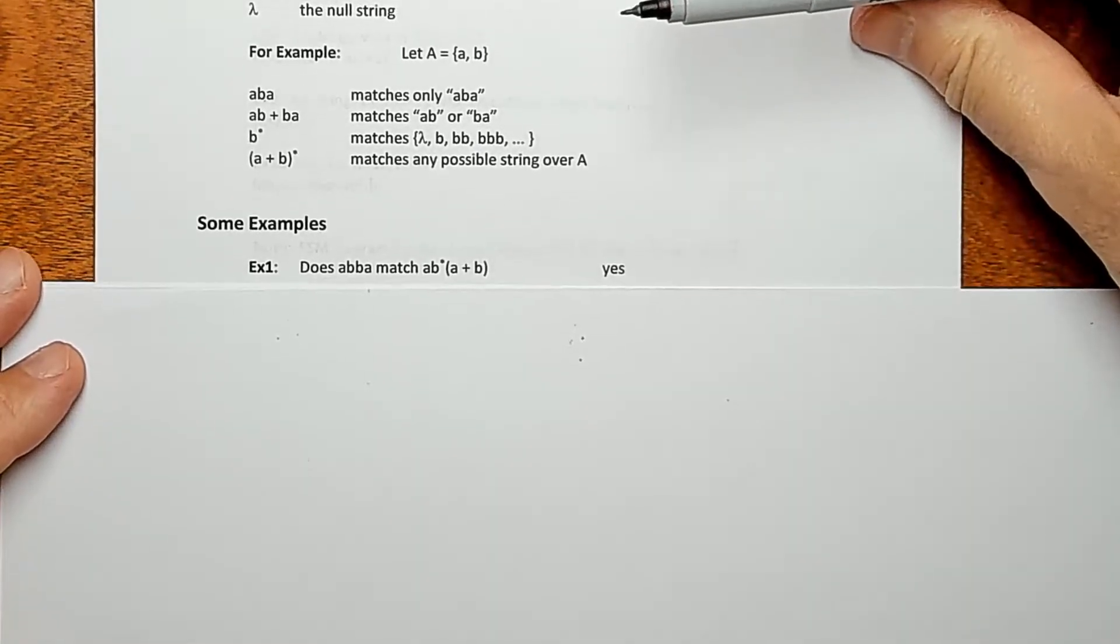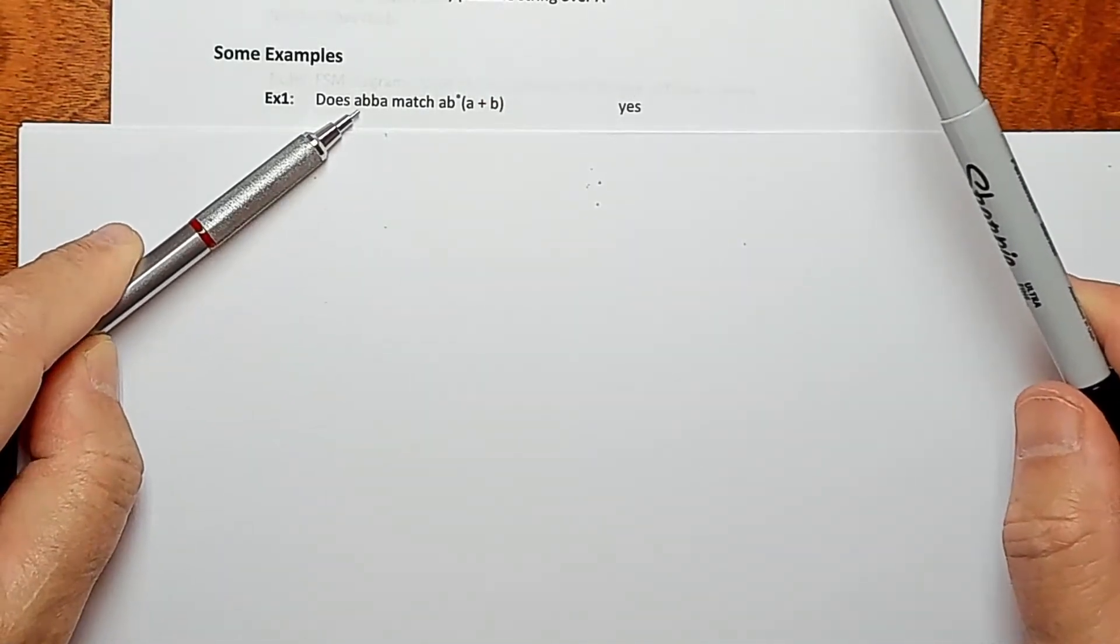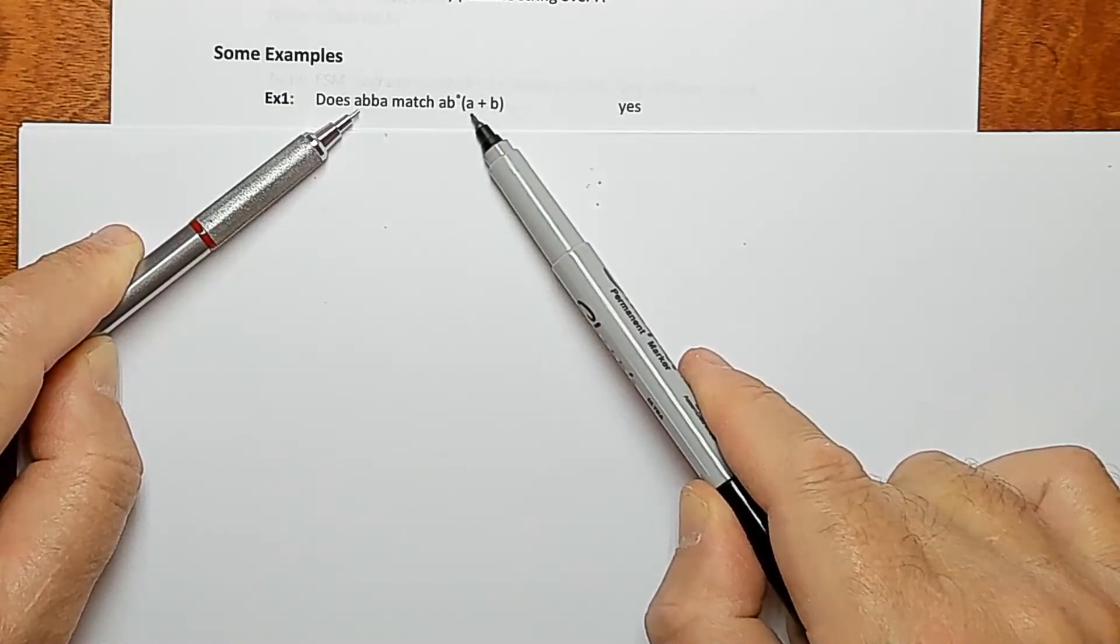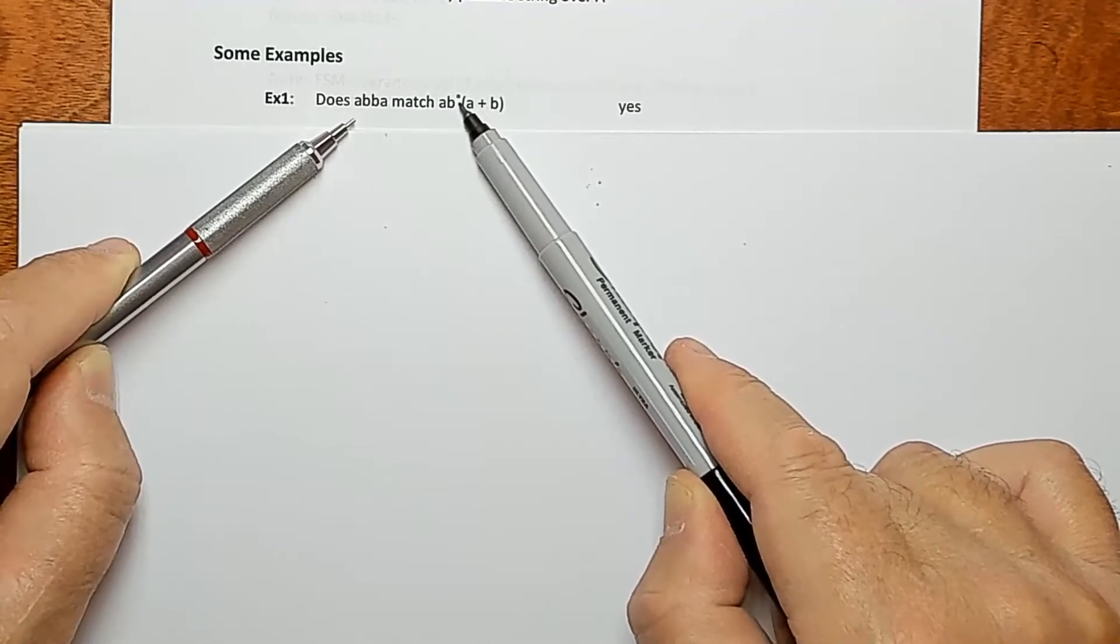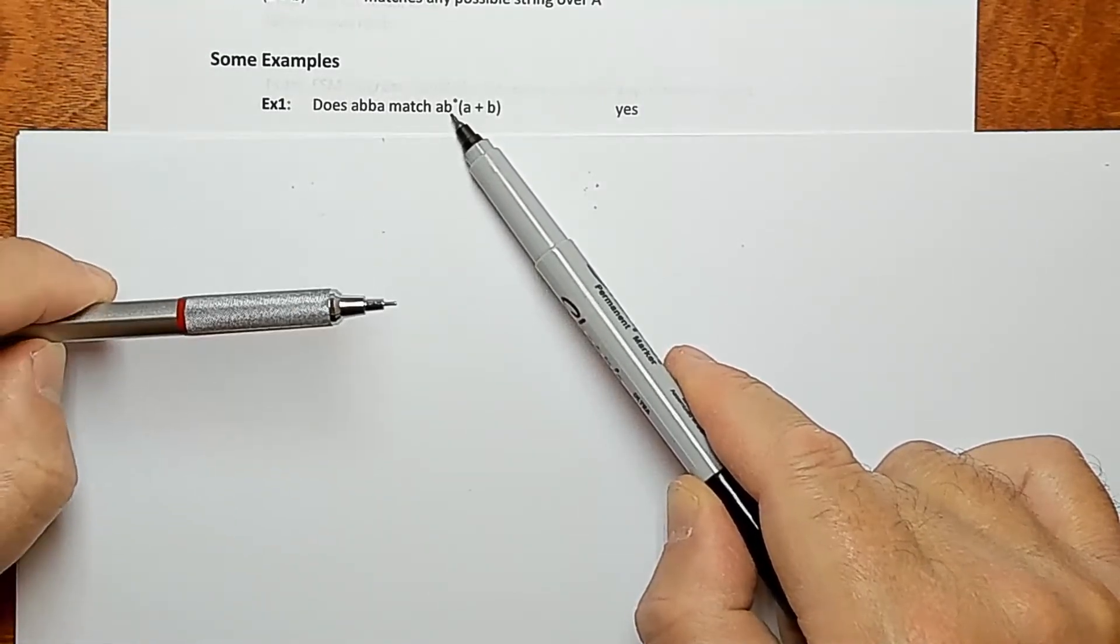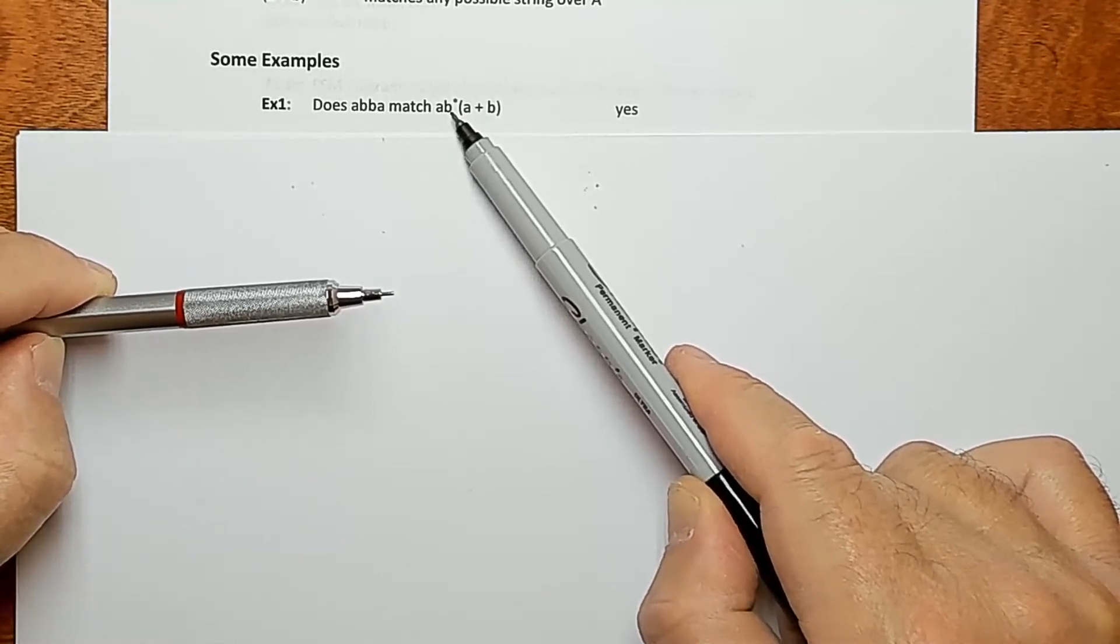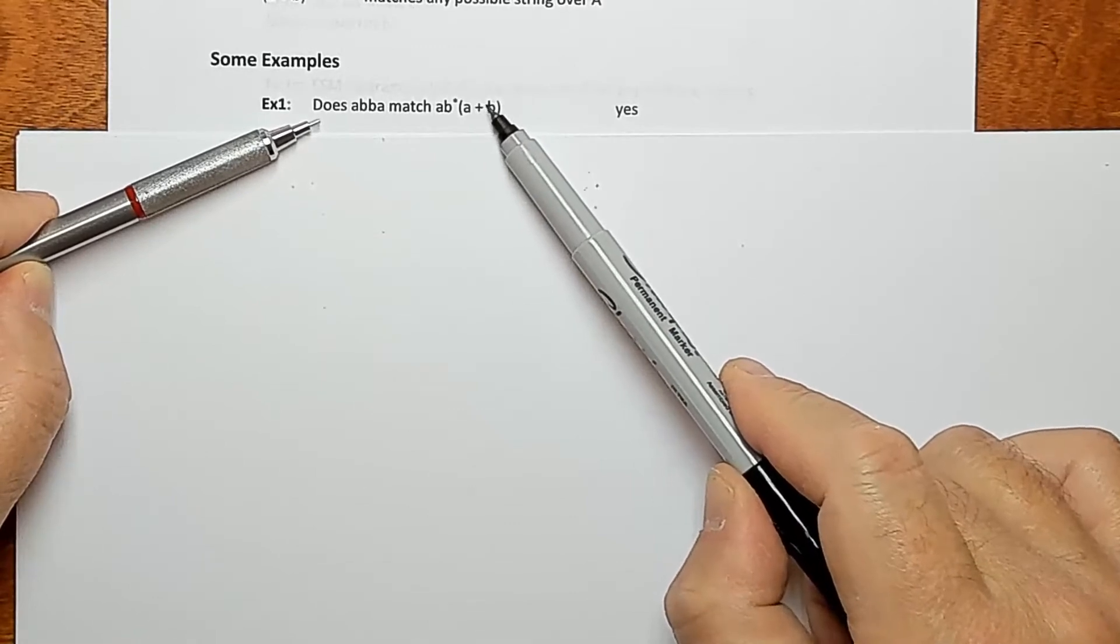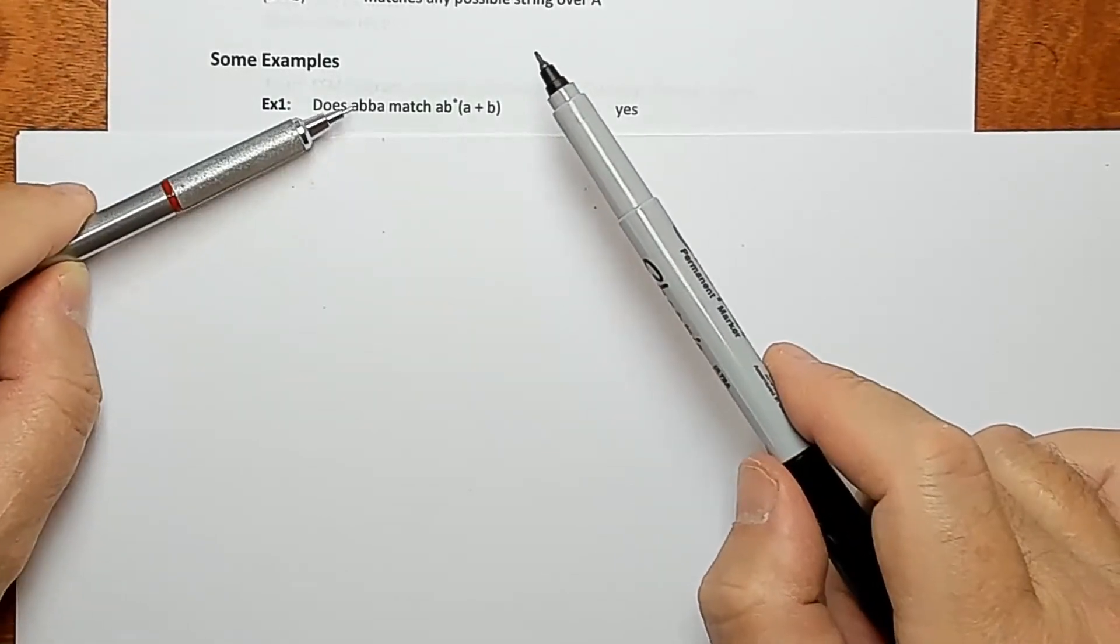All right, so let's get into some more complicated examples here. So here's a string, ABBA. And here's a regex, A B* (A|B). Okay, so B star, that is the star applies just to B, because it has a string A, we don't have any parentheses there. So it just applies just to B. If we wanted it to apply to A and B, we'd have to put parentheses around A and B because of the precedence rules.